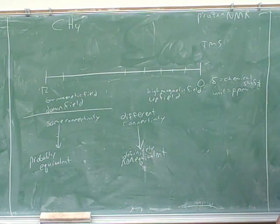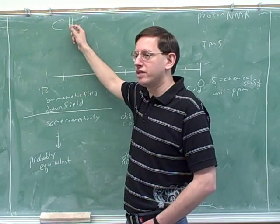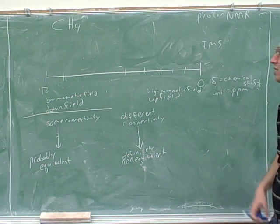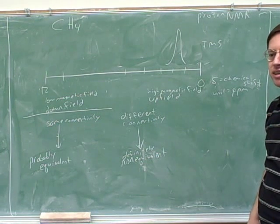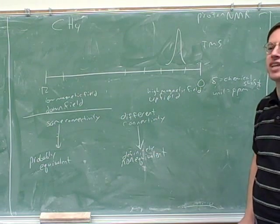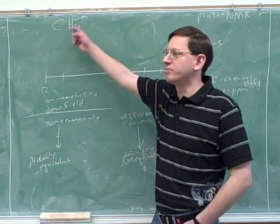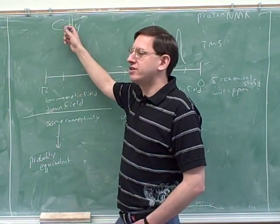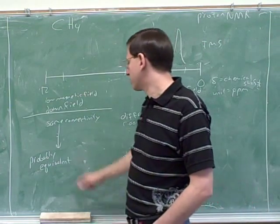For example, suppose we have methane. How many peaks would this show? All of these hydrogens are equivalent to each other — they all have the same connectivity, because each one is connected to a carbon connected to three other hydrogens. So even though you have four hydrogens, you'll still only have one peak, because they're all going to be in the same spot.